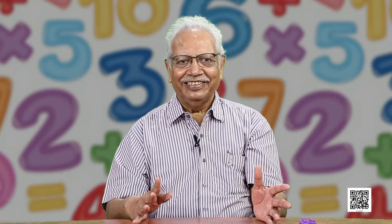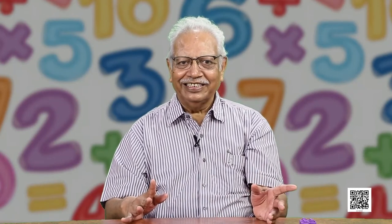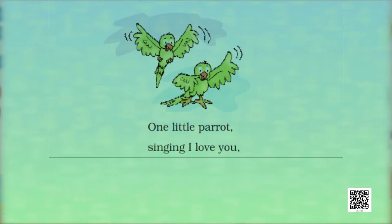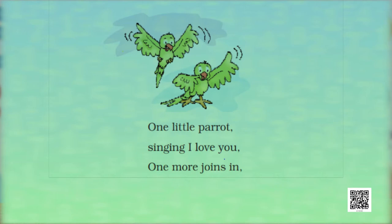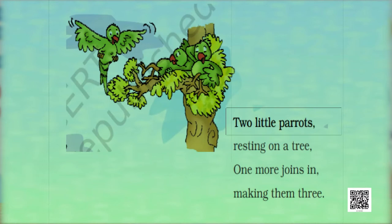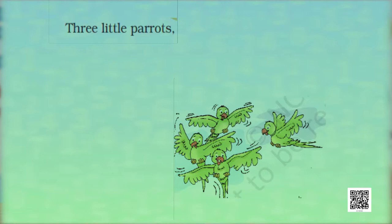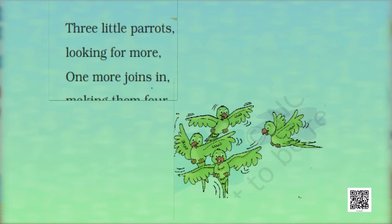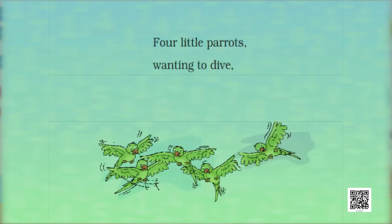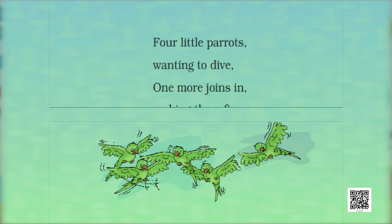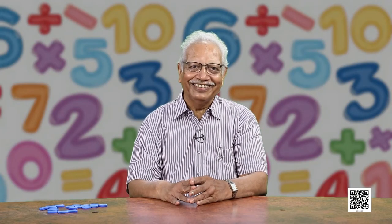You must have seen parrots — green colored with a beak of red. So, 1 little parrot singing 'I love you.' 1 more joins in, making them how many? 2. Similarly, 2 little parrots resting on a tree. 1 more joins in, making them how many? Making them 3. 3 little parrots looking for more. 1 more joins in, making them 4. 4 little parrots wanting to dive. 1 more joins in, making them 5.